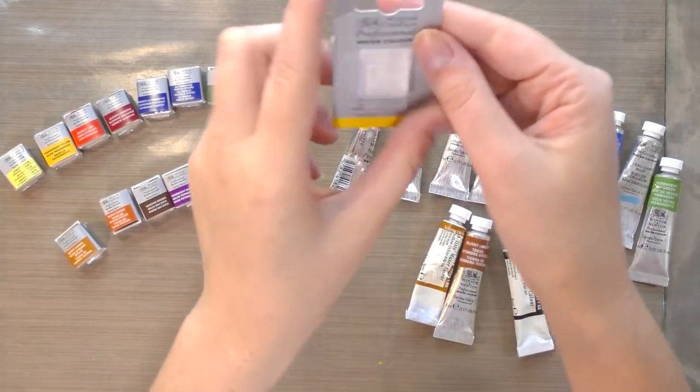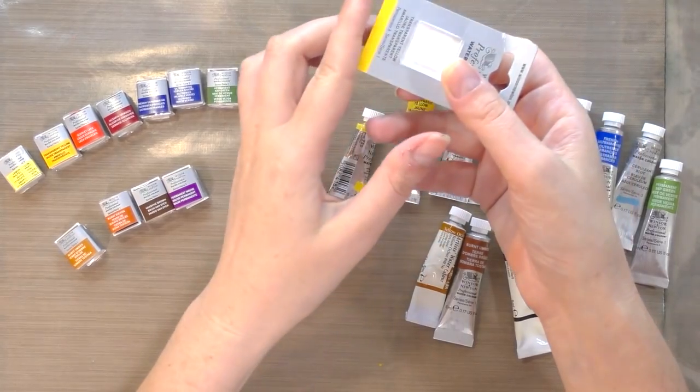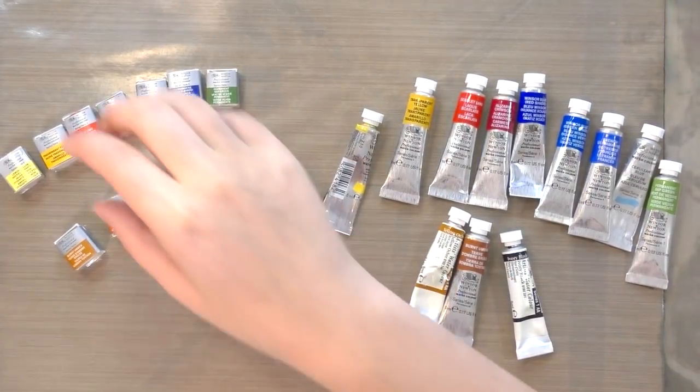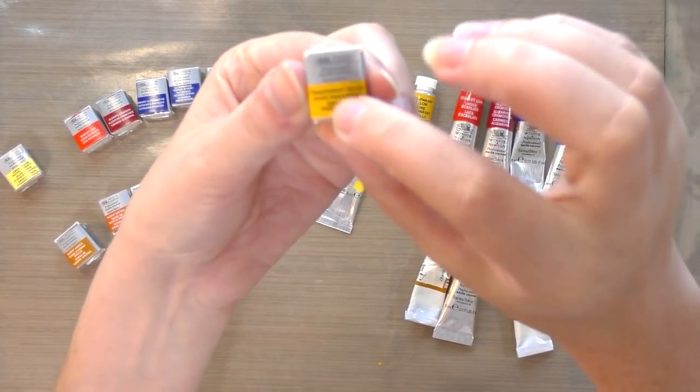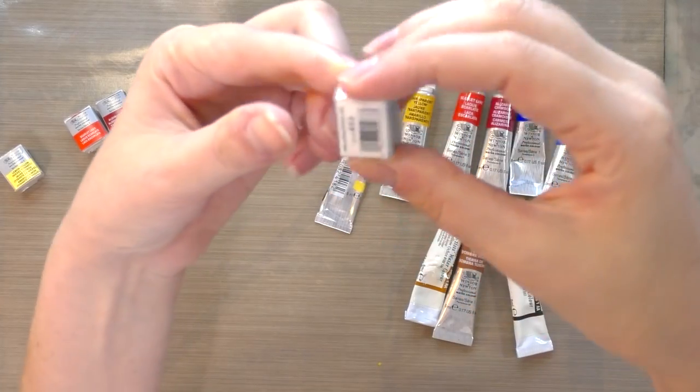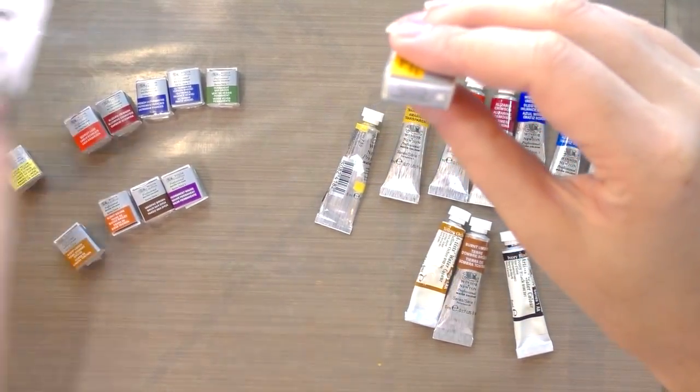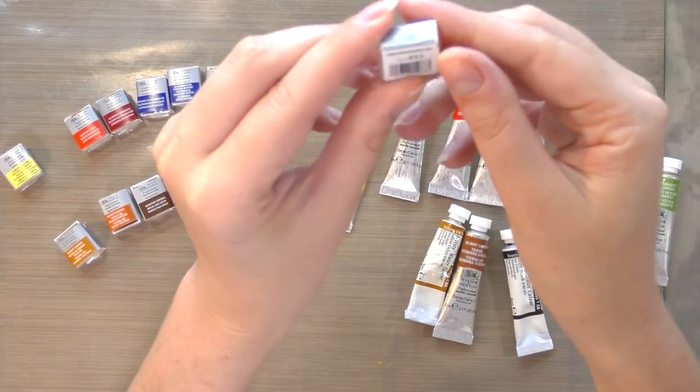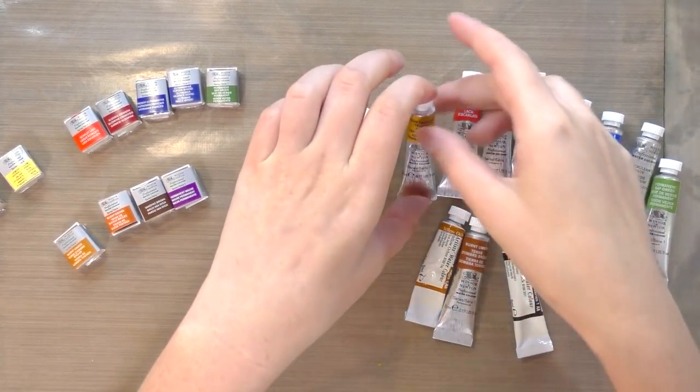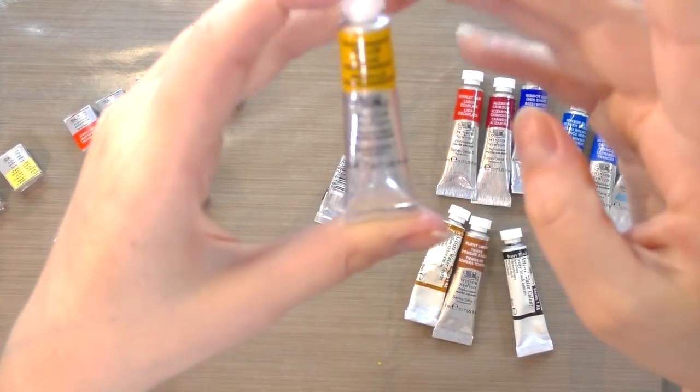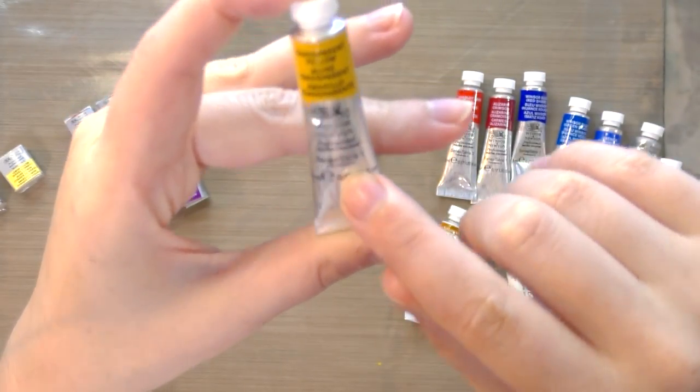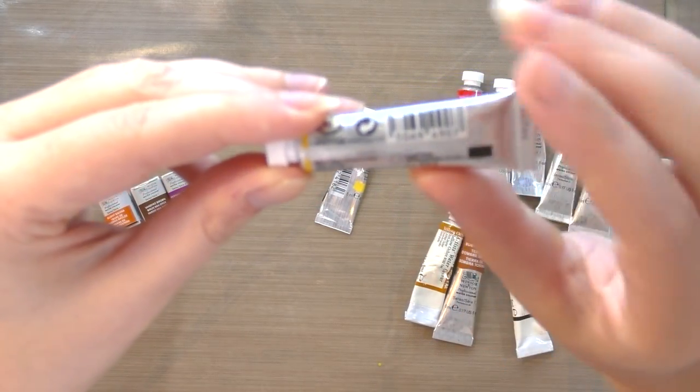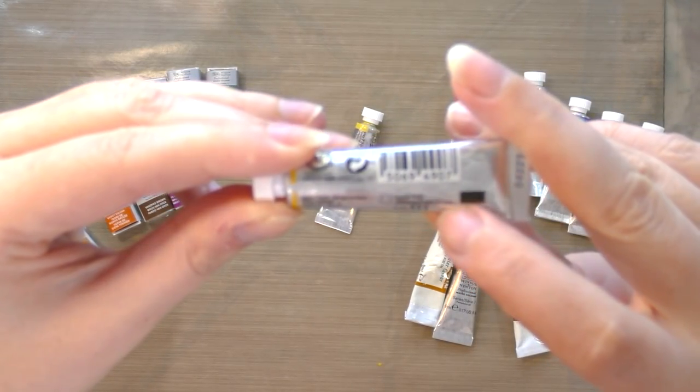So the packaging on the half pans contains not only the color name as well as a swatch of the color, but also the transparency, the light fastness, and the pigments inside. This information is also available on the actual individual pans themselves. So you don't actually have to hold on to this packaging. You can remove it. It's just store packaging. And these will have all the information you need on them. The same goes for the tubes. The tubes have a swatch of color, the series, as well as a permanence rating. And then on the back, there is an opacity swatch as well as a light fastness rating and the pigments.